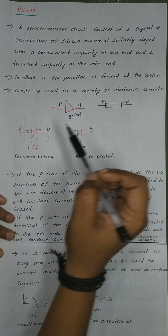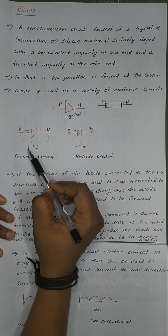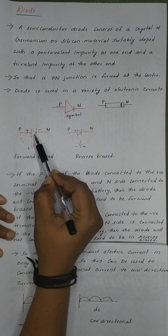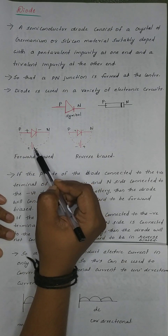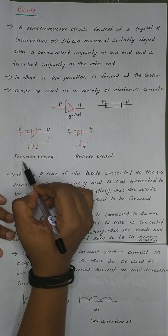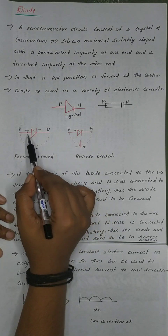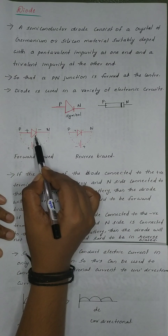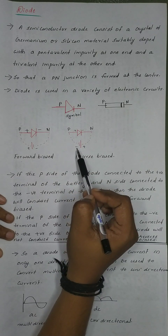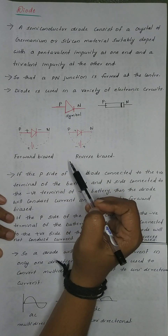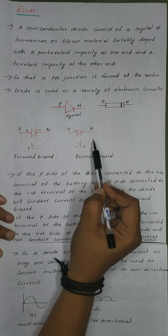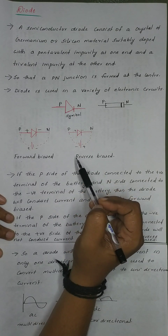This one side is used to connect the battery from the positive side. The positive side of the diode is connected to the positive terminal of the battery, and the negative side is connected to the negative terminal. This diode is going to be in forward bias — the positive P-type connected accordingly.